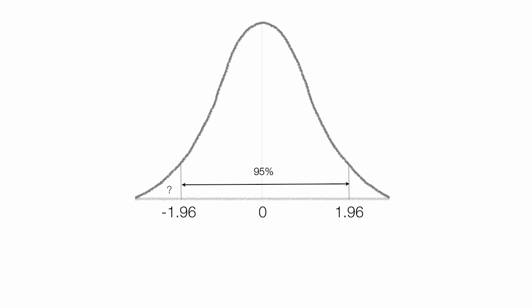I may want to know the probability an observation is less than negative 1.96 or greater than 1.96. The probability of all observations is of course 100%.